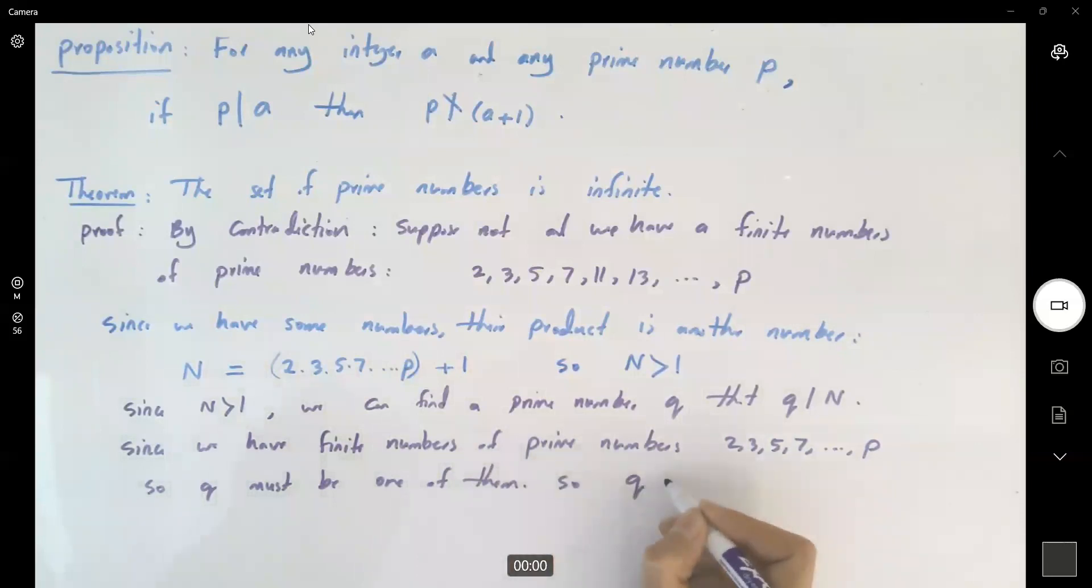So q definitely divides the multiplication 2 times 3 times 5 times 7 times p. And q divides their multiplication, which we call, for example, a. And q divides the addition by 1. So this is your a and this is your a plus 1. So q divides a and q divides a plus 1.